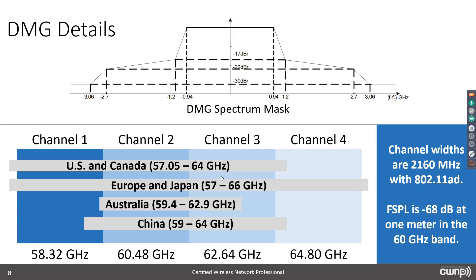For DMG, channel widths are 2,160 MHz (2.16 GHz). Free space path loss is -68 dB at just 1 meter — for the full range from 57 to ~65 GHz — meaning it loses power very rapidly. Channel 2 is available everywhere; Australia only has channel 2, China has channels 2 and 3, Europe and Japan support all four channels, and the U.S. and Canada support channels 1 through 3. Having only one channel in consumer environments isn't a big deal since 60 GHz signals attenuate quickly through walls.